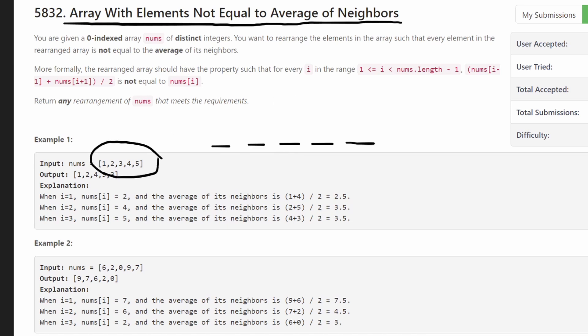right? One, two, three, four, five. It's already sorted. So what my question to you is, what is a way that we can place these numbers such that there's never going to be a case where a value is equal to the average of its neighbors?